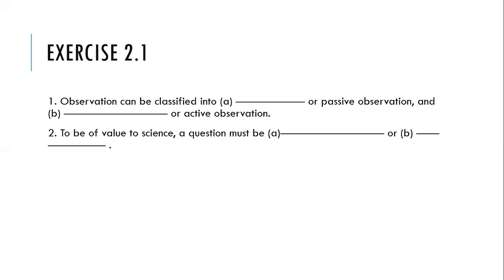Let's look at our exercises. Observation can be classified into a dash or passive observation — remember we said observation, what is that? — and dash or active observation. Then number two: to be of value to science, a question must be dash or dash. The answers are in the slides, so you need to pause the video and go back if you cannot answer the two questions.